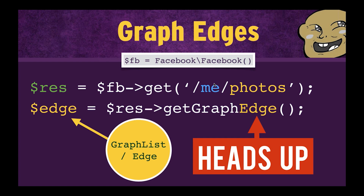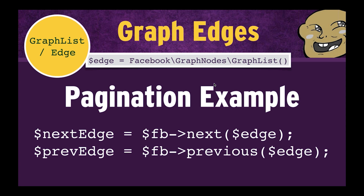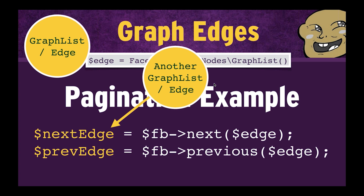Just little gotchas — hey, this is Facebook, we'll change things all the time. But what this graph list does is it helps us paginate over data. We can use the Facebook super service to go next or previous, and we just send in that list. It'll return a list for us — we don't have to do any HTTP requests. It'll do all that stuff for us and return another list, which is really handy.